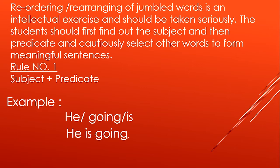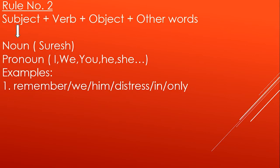Now we have a little more complex case. Rule number two: if you have words in a sentence, then follow this order — first the subject, then the verb, then the object, then the other words. You can find the subject in two ways.